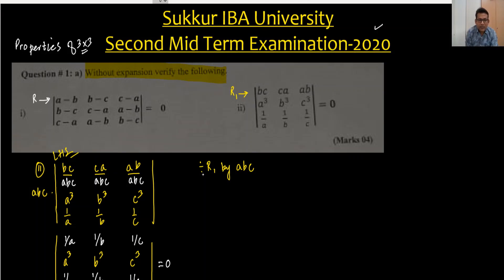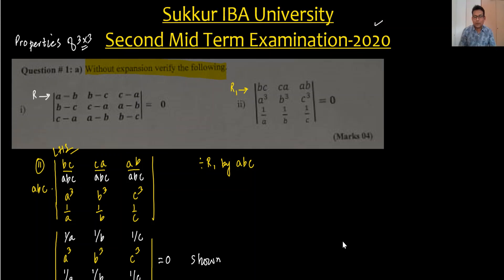The result is coming zero, and that is shown. We have done question one by using not the expansion method, but properties of the three by three matrix. Just ask your teachers or the university: do we have to learn all the properties of three by three determinants? Because when they say to do everything from the additional mathematics book but this topic is not there, that is my concern. If they say yes, I will make a video on this topic with all the properties and upload it. Thank you so much and have a nice day.